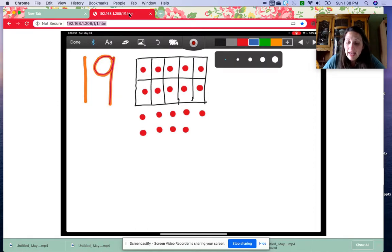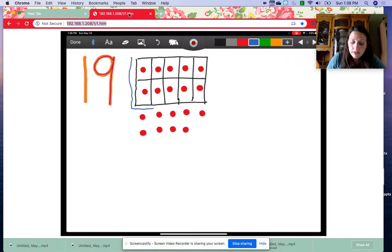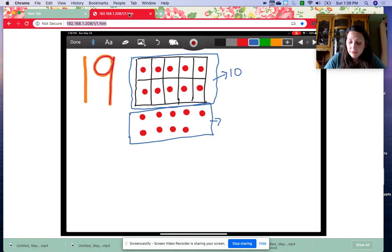And while I was making those 19 counters, I actually made two groups or two parts. Here's my first part. It's the full tens frame. And here's my second part. It's the part of the tens frame. It's a tens frame that's not full. This group is full. So I know it has 10. This group is not full. We can count to be sure. One, two, three, four, five, six, seven, eight, nine.